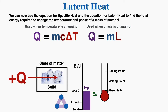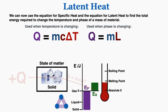Now that we know about both latent heat and specific heat, we can use both equations to find the total energy required to change the temperature and phase of a material. Returning to an animation of a solid starting at absolute zero with constant heat added: when the material is not at a phase-change temperature, all heat goes into changing kinetic energy, and we use Q equals mc delta T. That equation applies for any temperature outside where a material changes its phase.